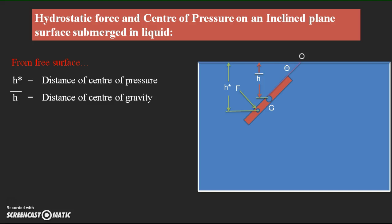For the derivation, we need to assume a particular elemental strip. To define the location of the elemental strip on this arbitrary plate inclined to the free surface, we assume the distance of the elemental strip from the free surface as H. We also need another reference line from point O, drawn perpendicular to the plate, which we call the O-O imaginary reference line.